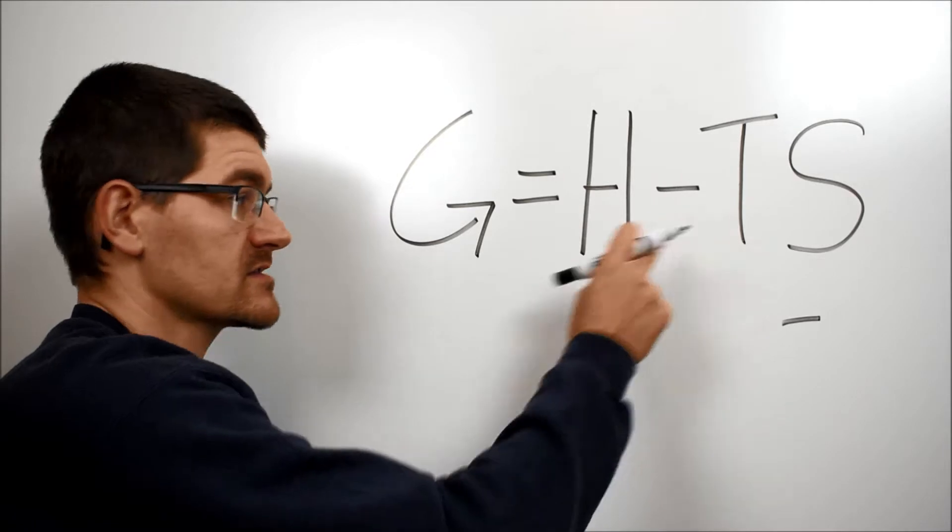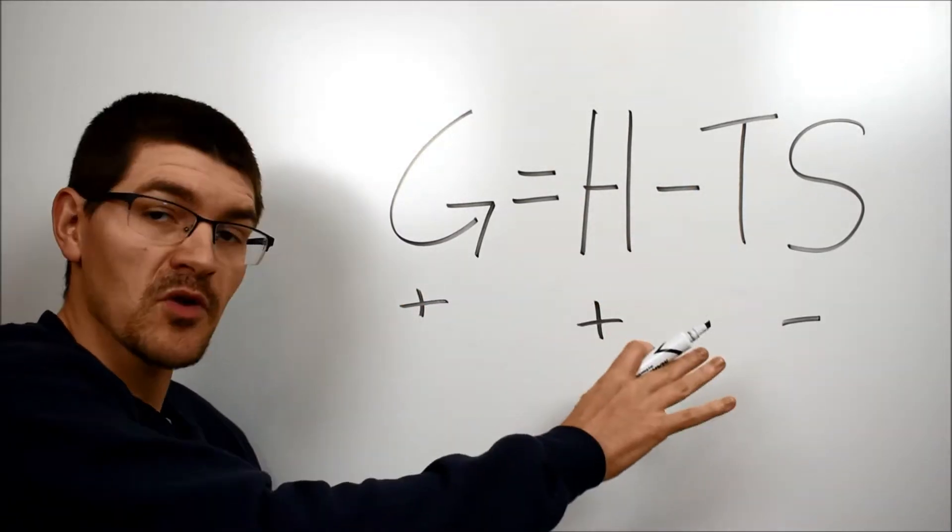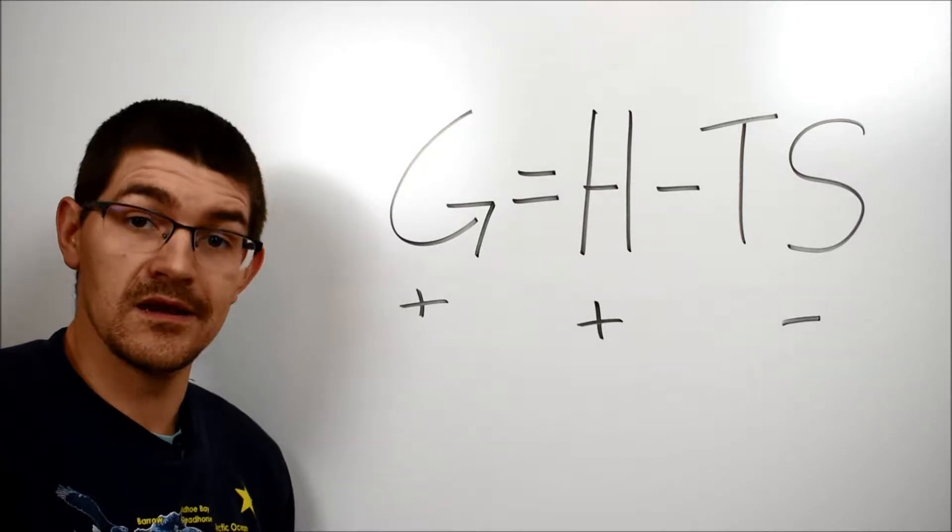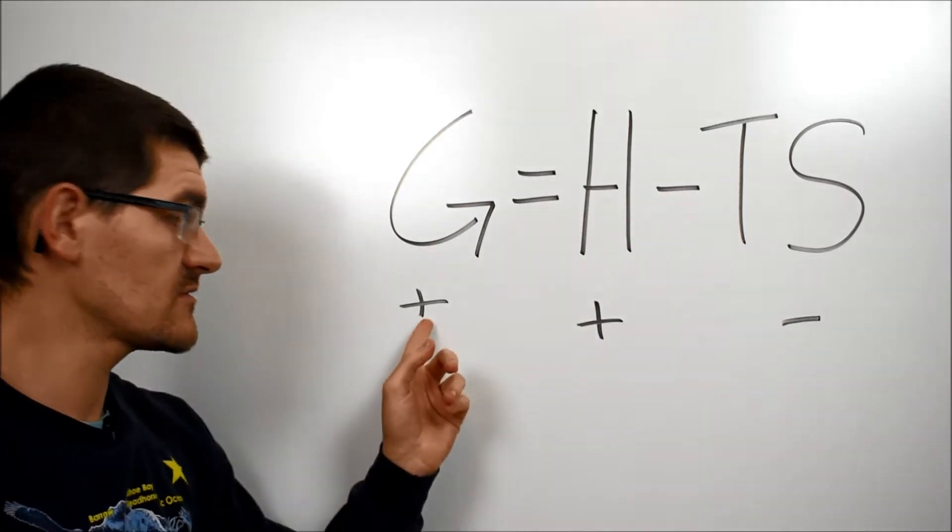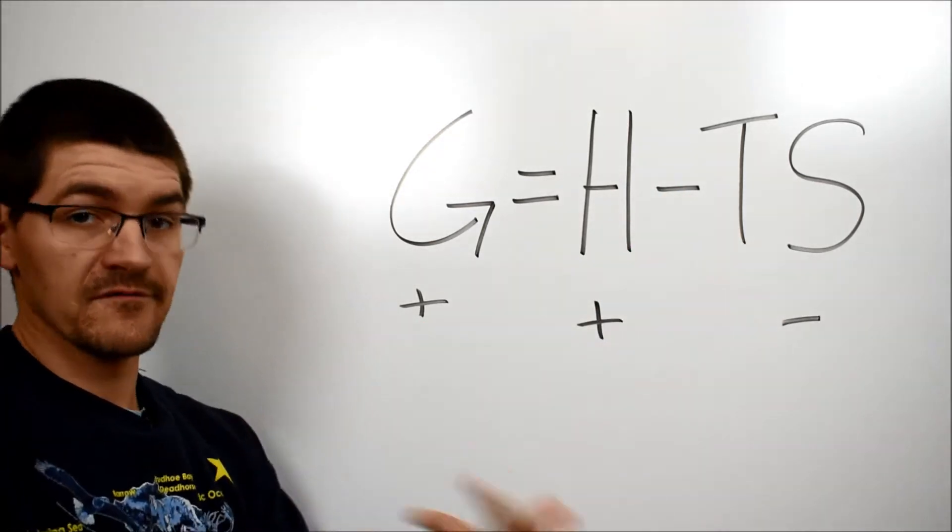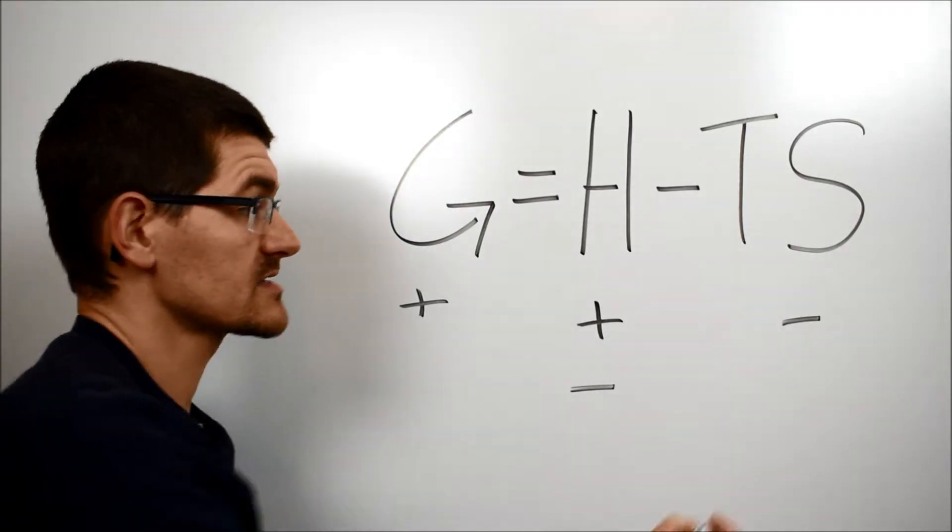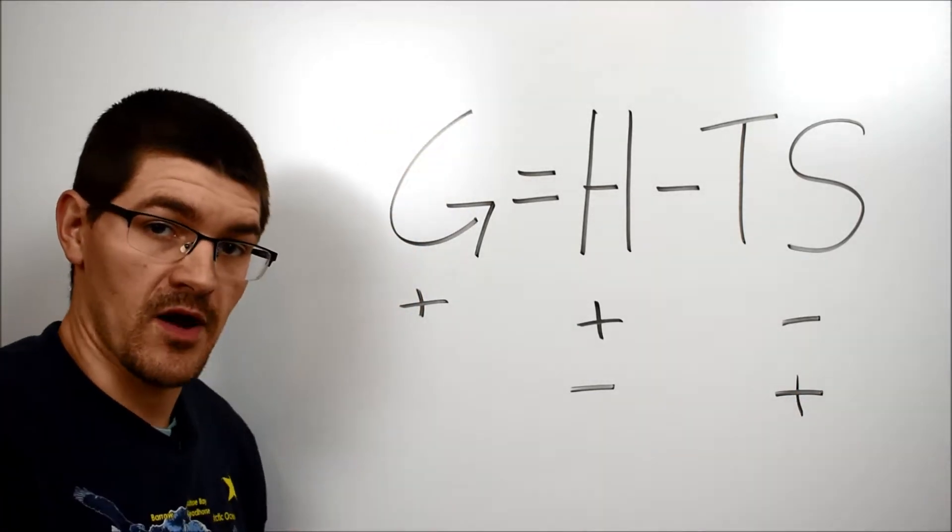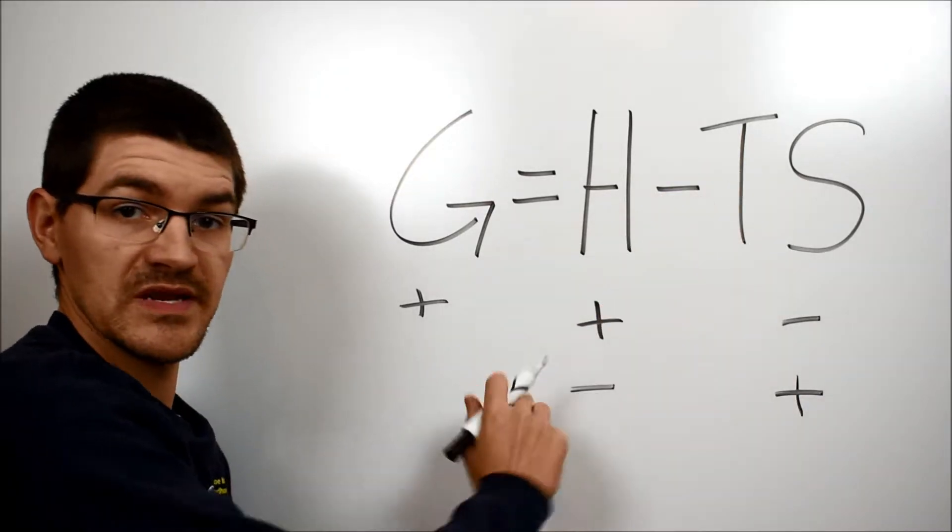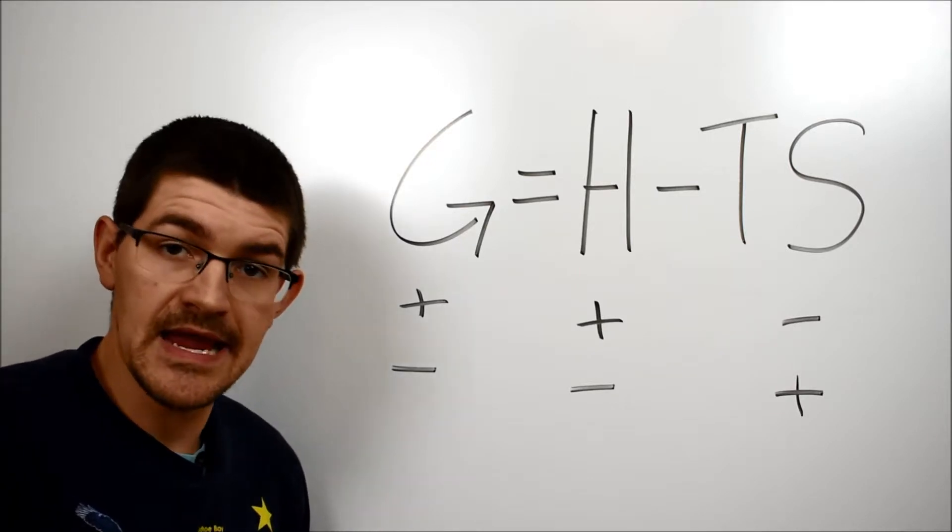You can see that the negatives here cancel out and the free energy will always be positive meaning these processes will always be non-spontaneous. Doesn't matter what the temperature is, these numbers are always going to be positive positive add up to a positive number. Flipping that when we have a negative enthalpy exothermic process and a disorder increasing entropic process you can see that that will always be negative, the free energy will always be negative, the process will always be spontaneous.